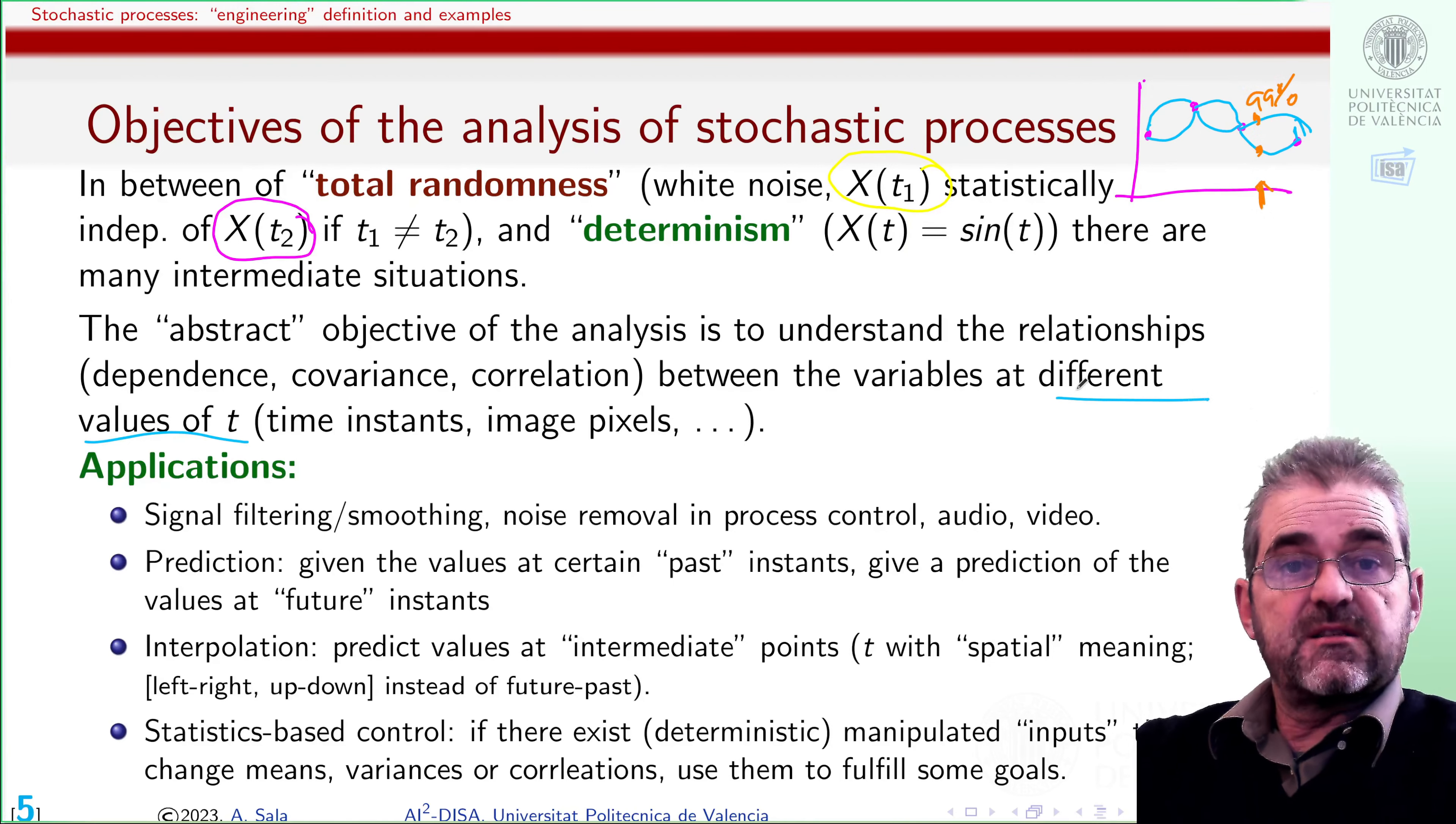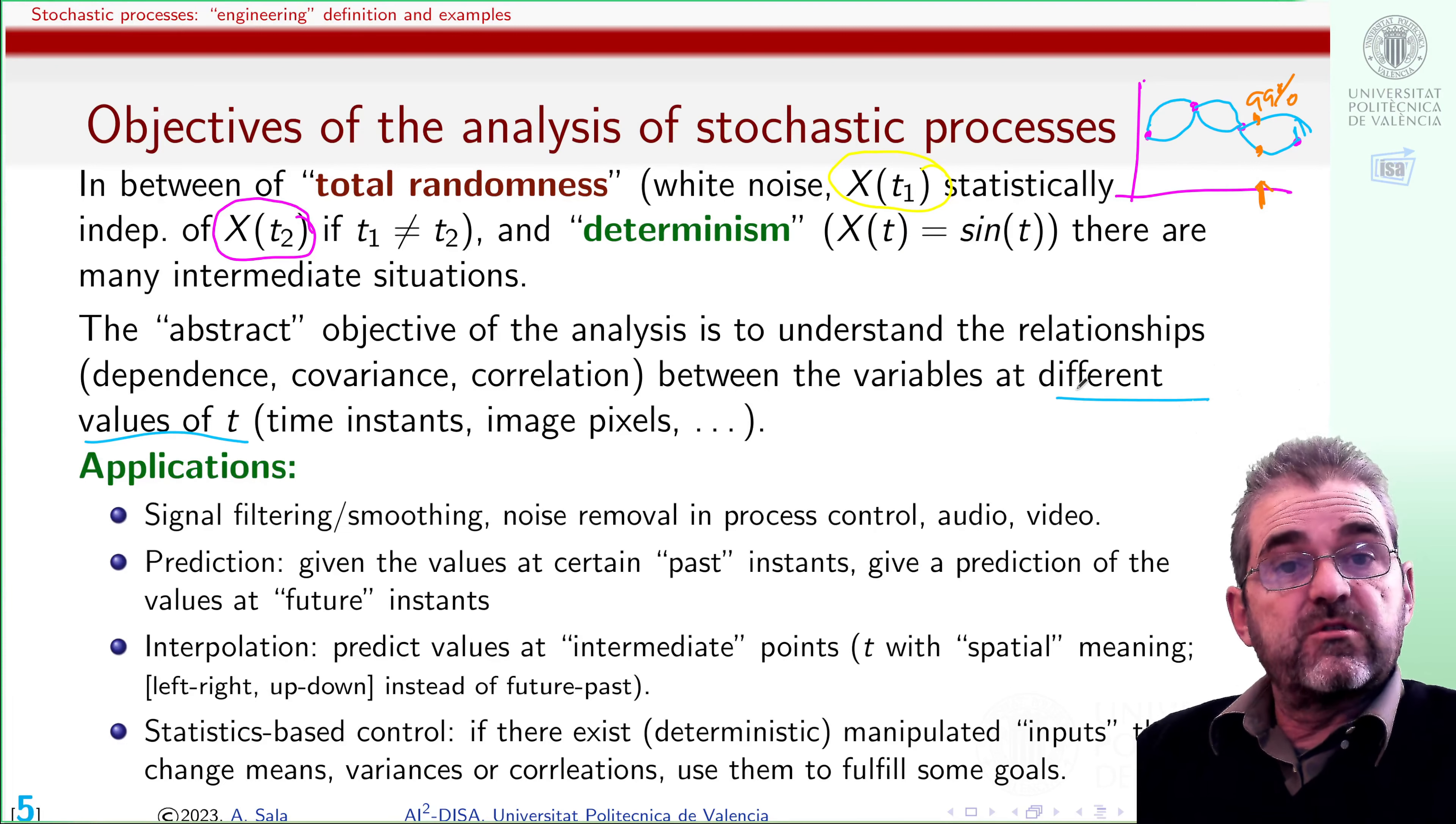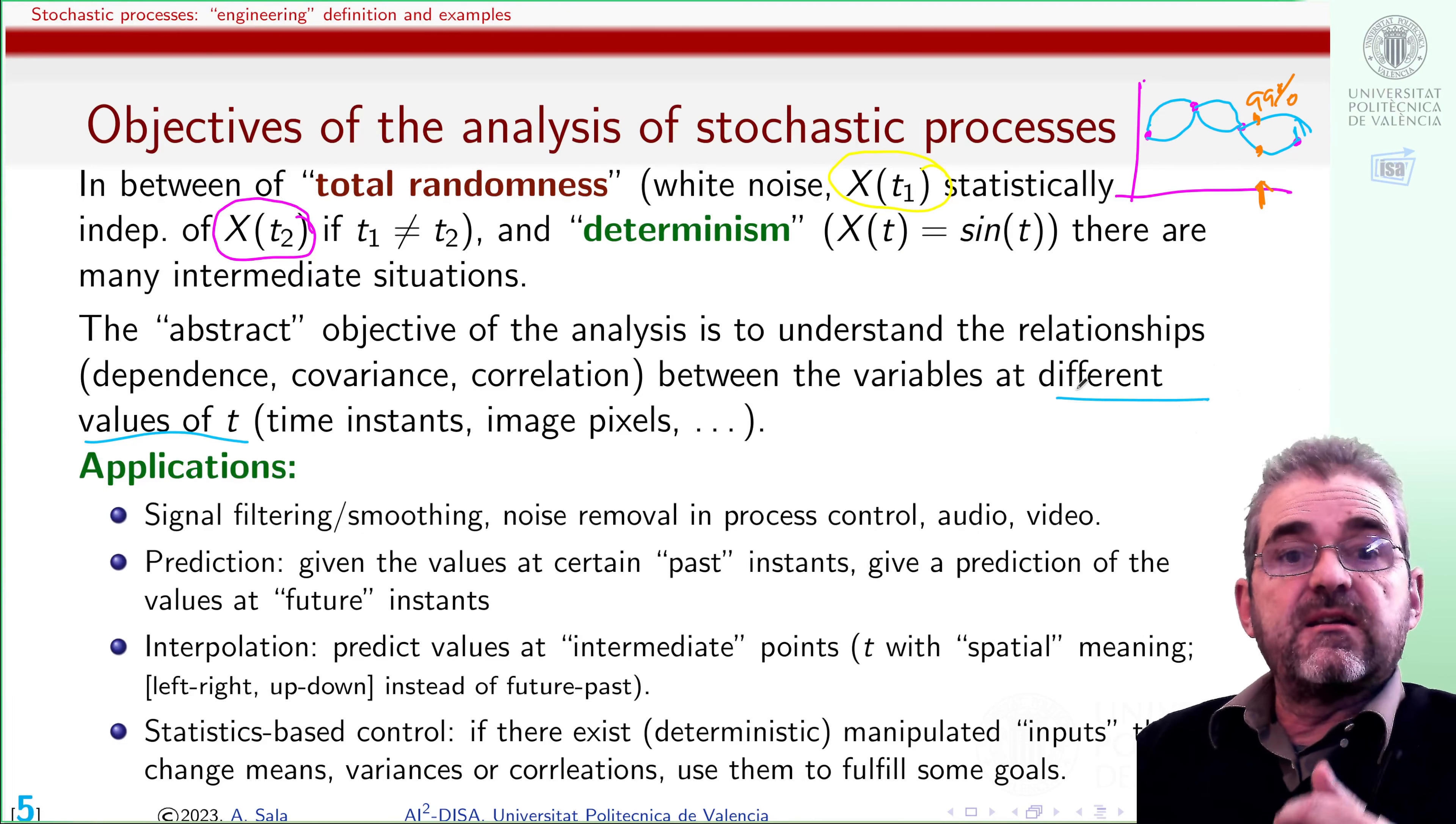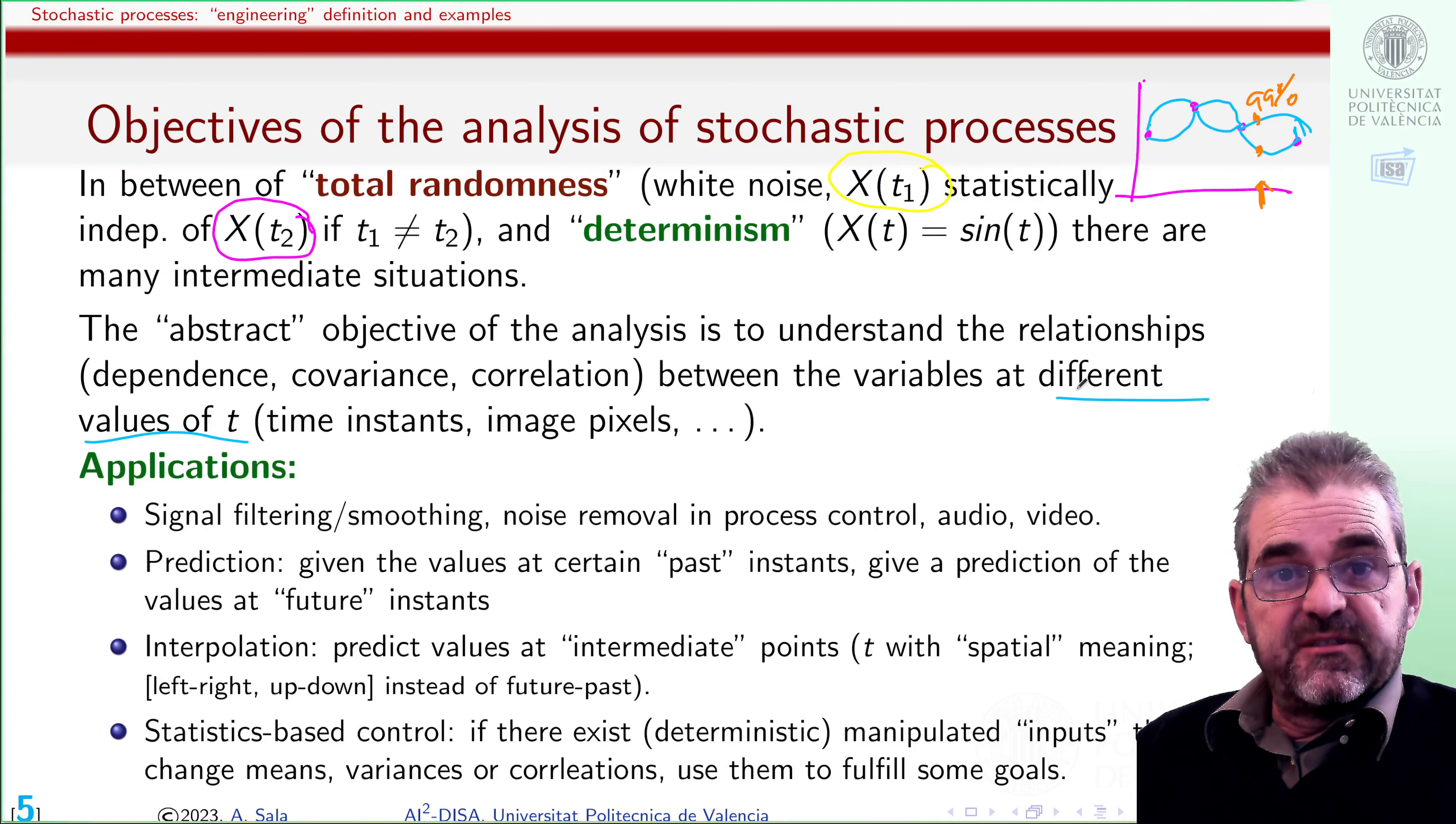And last, I may wish to do some statistics-based control, in the sense that if there exists some deterministic, because I decide what to do with them, manipulated inputs that change means, variances, correlations, or whatever, then I may use them to fulfill some goals. If I have a random temperature, but moving some steam valve, I can increase its mean, well, then I can use that to achieve, not perfect control, because the temperature will be fluctuating, but at least the mean can be moved to a given point. So that is the motivation of statistics-based control.